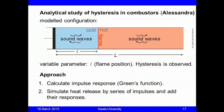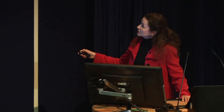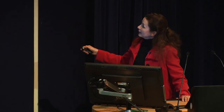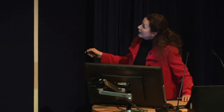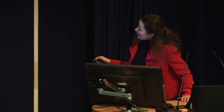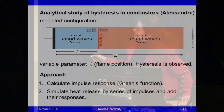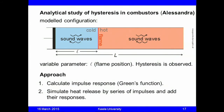Then we come to Alessandra's project, which is more theoretical and focuses on the hysteresis behaviour observed by Nalini — also commonly observed in other combustion systems. The model configuration is a tube with two ends: a cold section upstream, a hot section downstream, the two divided by a flame, with sound waves on either side. One variable parameter is ℓ, indicating the flame position. Hysteresis is observed, and Alessandra's aim is to simulate this mathematically using a Green's function approach.